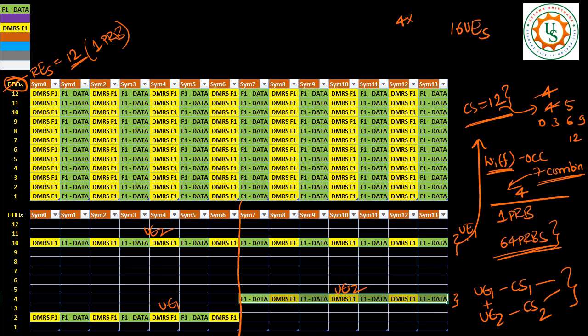Which means that on a single PRB, I can transmit 16 UEs worth of information by multiplexing them using different codes. So in that case, how many PRBs are required? Finally, rather than 64 PRBs for 64 different UEs, you just need 64 by 16, which is 4 PRBs. Because in first PRB, you can multiplex 16. In the second PRB, you can multiplex 16. And totally, you can cover with 4 PRBs, all 64 UEs.